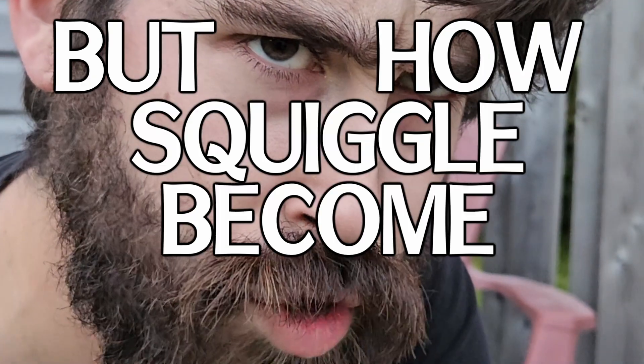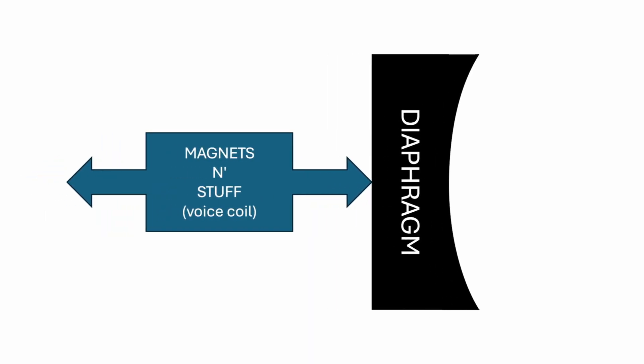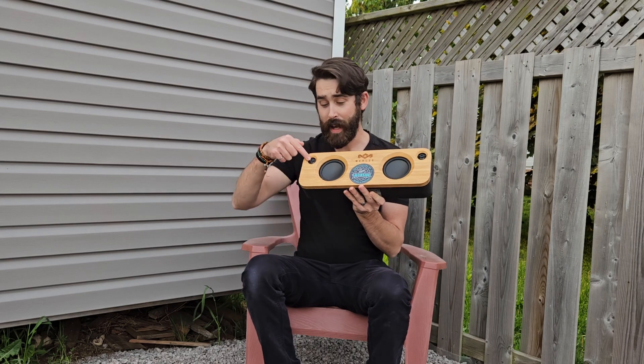But how does squiggle become sound? Waveforms all by themselves are useless, like building instructions when you have nothing to build with. Waveforms need speakers in order to become useful — whether a Bluetooth speaker, headphones, earbuds, or a built-in device speaker. Regardless of the type of speaker or its specific design, they all have one thing in common: they're vibrators. They vibrate. The vibration inside of a speaker is intended to push and pull on a part called a diaphragm. This particular speaker has two big diaphragms and two little ones.